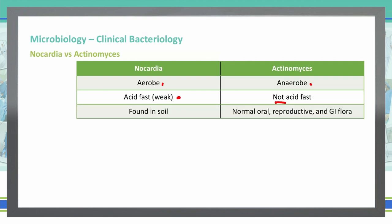The location where we find Nocardia is going to be in the soil. There's a lot of oxygen in the soil area, therefore Nocardia thrives in that aerobic location, whereas Actinomyces is normally found as a normal part of the oral, reproductive, and GI flora. There's not a lot of oxygen in that area, so it thrives better in that anaerobic environment.